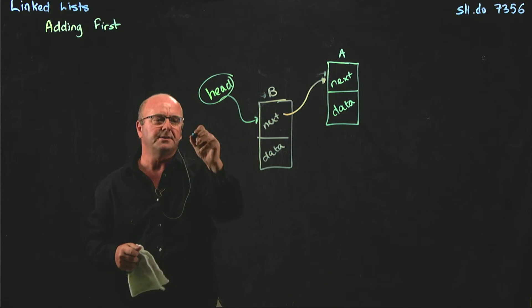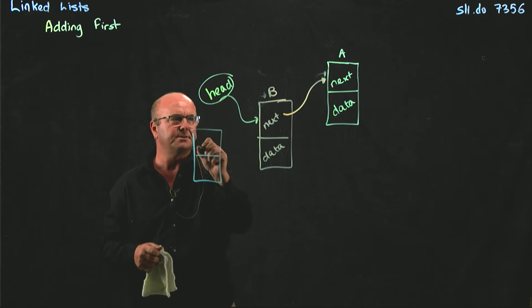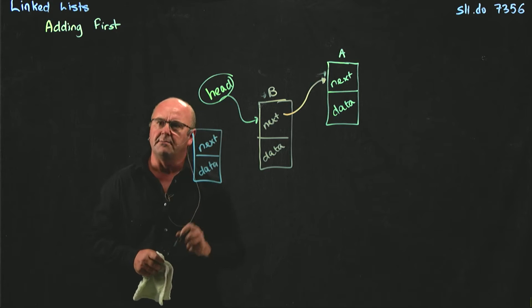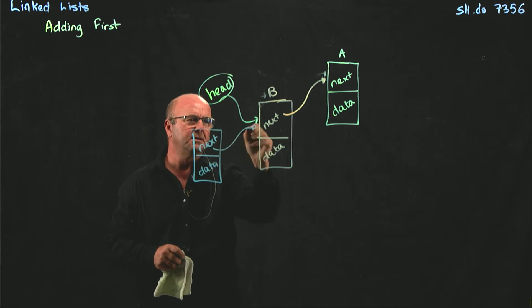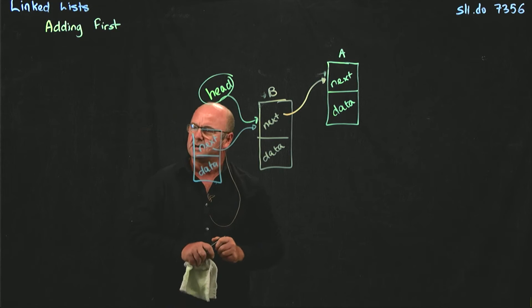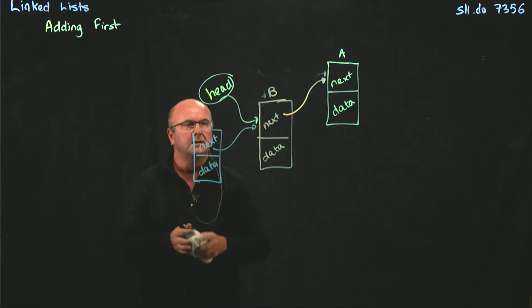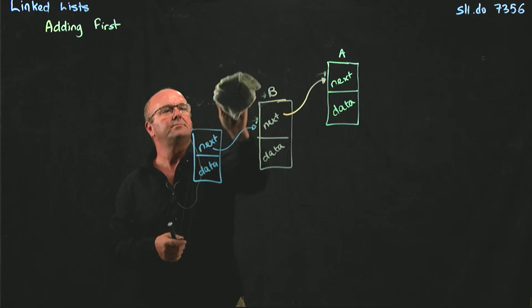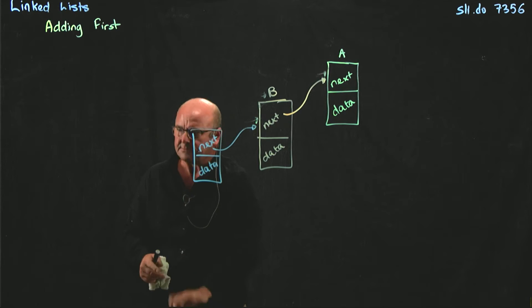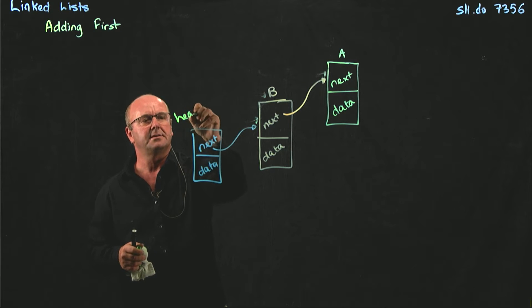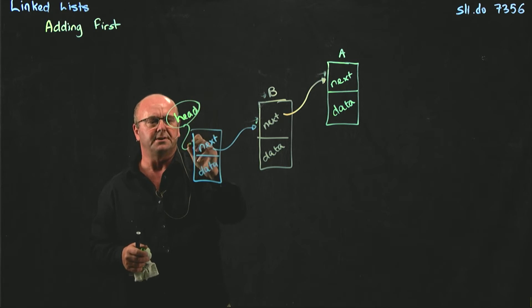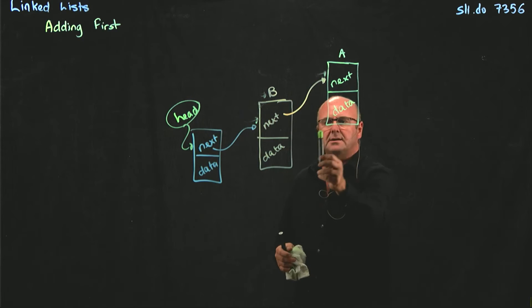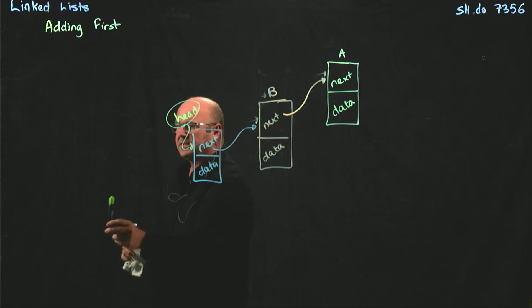If we want to add another node, we create the node. We make the next pointer point to our current head. We take our head pointer and we make that point to our new node. And so we're growing our linked list by adding things always to the beginning.